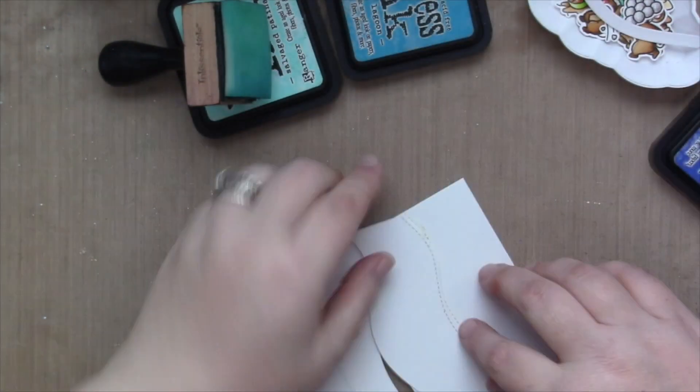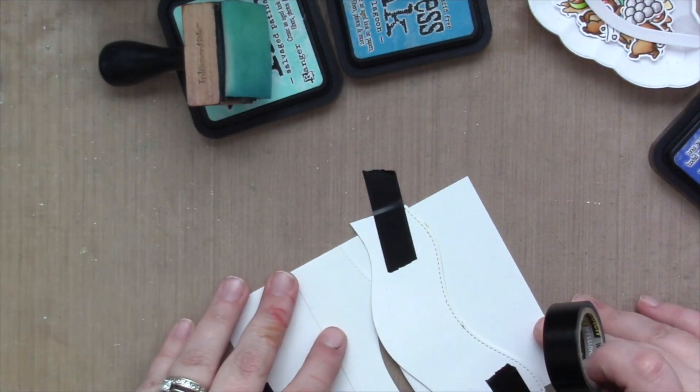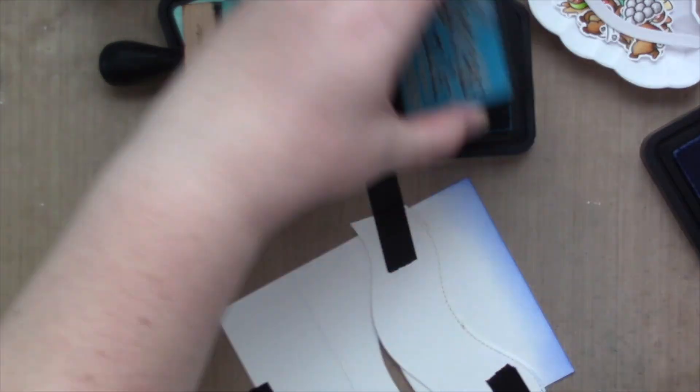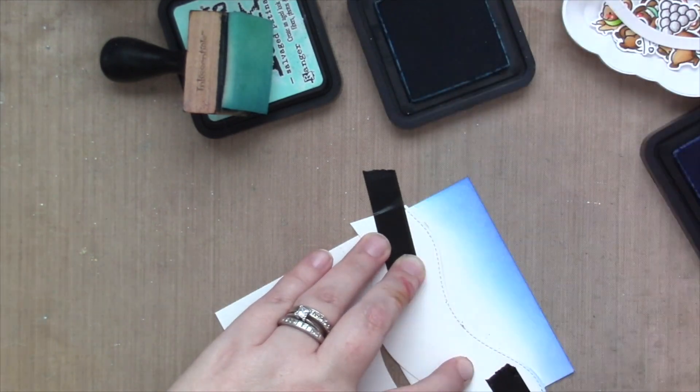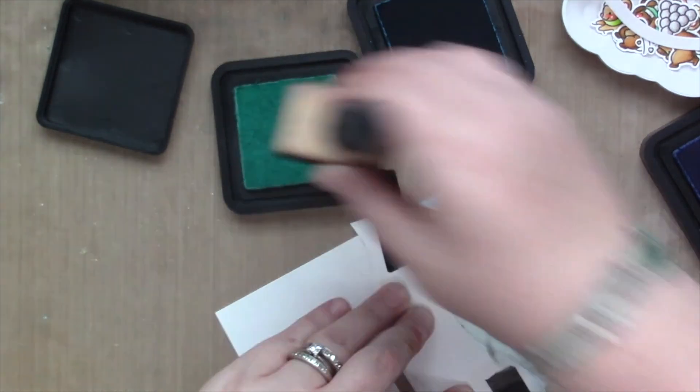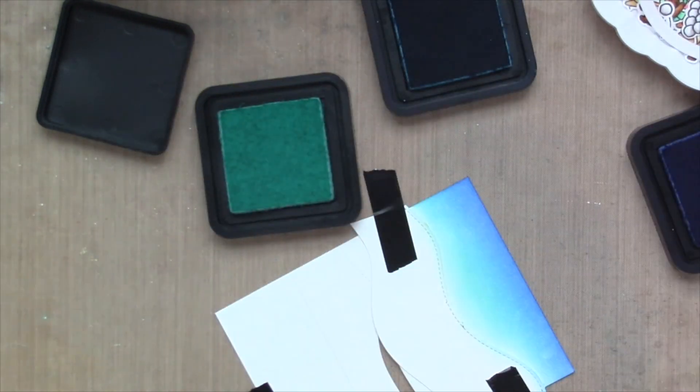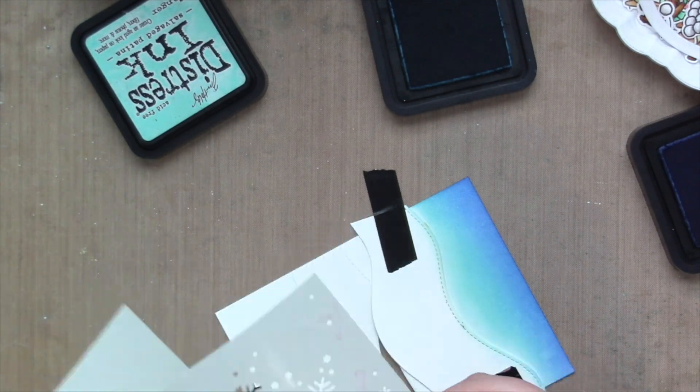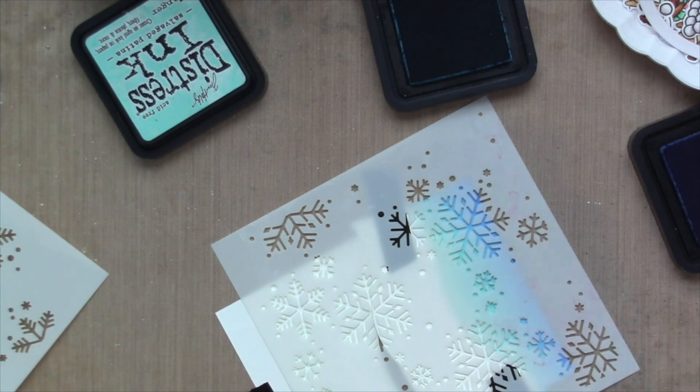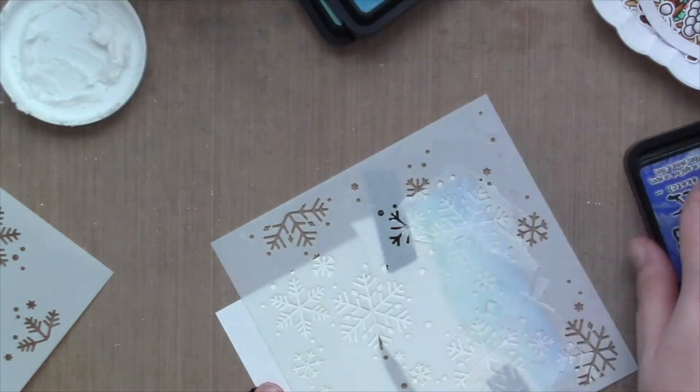So I die cut out another border with that same shape of the stitched hillsides. And I'm just going to use it as a mask or a stencil and color in with Distress Inks, my sky. And it works perfectly. No harm, no foul. I use blueprint sketch at the very top, mermaid lagoon in the middle and salvage patina at the very bottom, just to add a pop of that pretty blue sky for a winter wonderland.